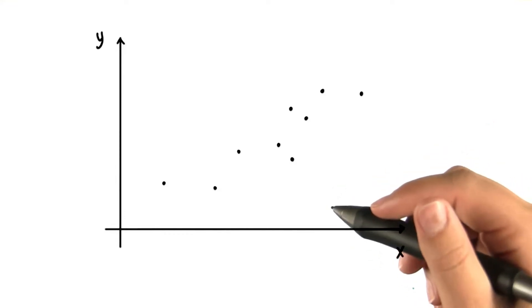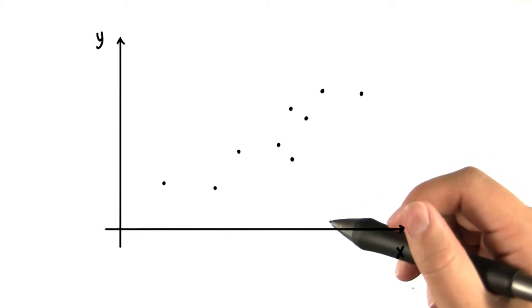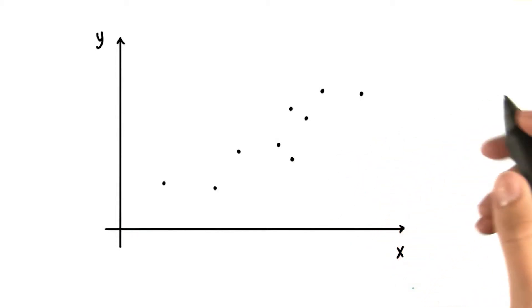In lesson 14, we examined ways we could analyze the relationship between two numerical variables using scatter plots and Pearson's r.